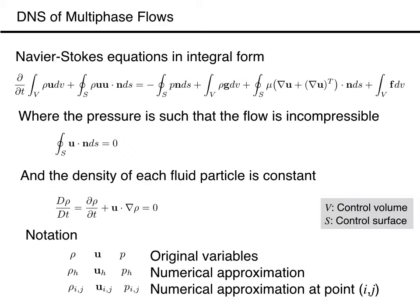Applying the conservation of momentum principle to a small stationary control volume tells us that the rate of change of momentum in the control volume, the first term, plus the inflow of momentum through the surface of the control volume, given by the second term on the left, are equal to the sum of body and volume forces acting on the control volume. The first term on the right is the net force due to pressure, which acts normal to the control surface. Then we have a body force due to gravity, the third term on the right-hand side is the viscous force, and the last term represents other body forces acting on the fluid, which will include the surface tension.